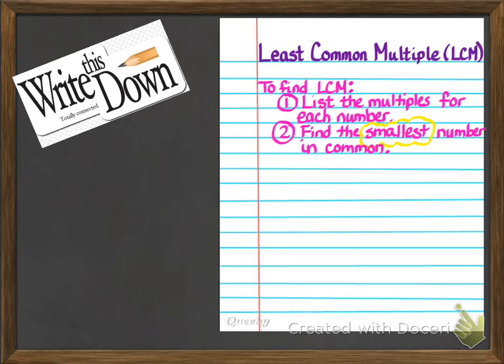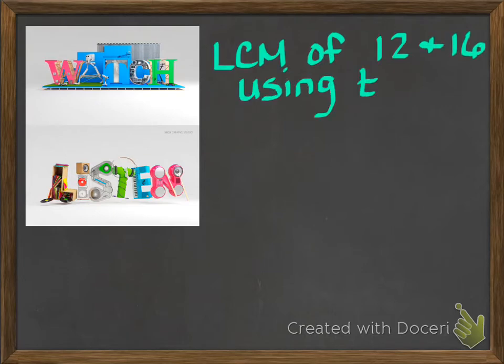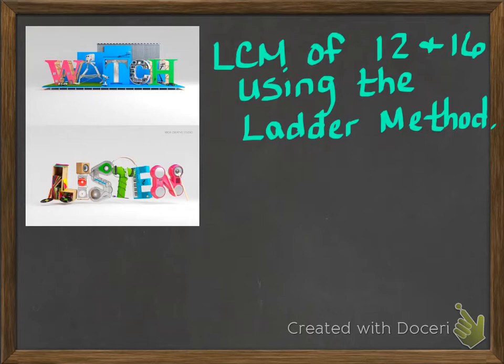I'm going to show you another strategy on how to find LCM. So I would like for you guys to put your pencils down and watch and listen. In this strategy, I'm going to show you how to find the least common multiple of 12 and 16 using the ladder method. We're going to begin by writing both numbers down side by side like I did here. Then I'm going to go ahead and put this L-shaped thing here. L for ladder.